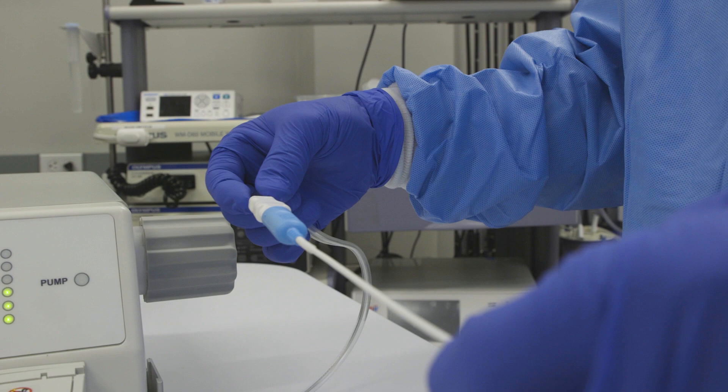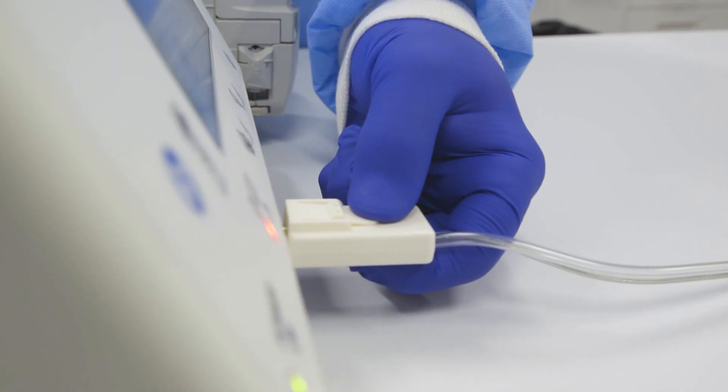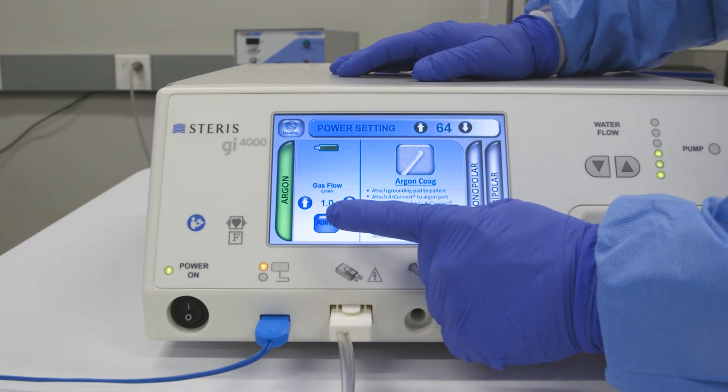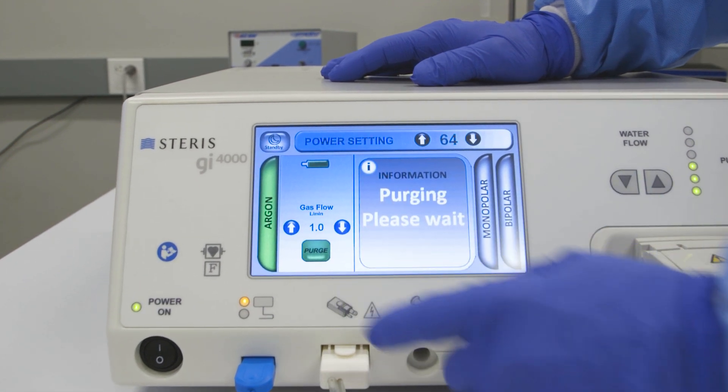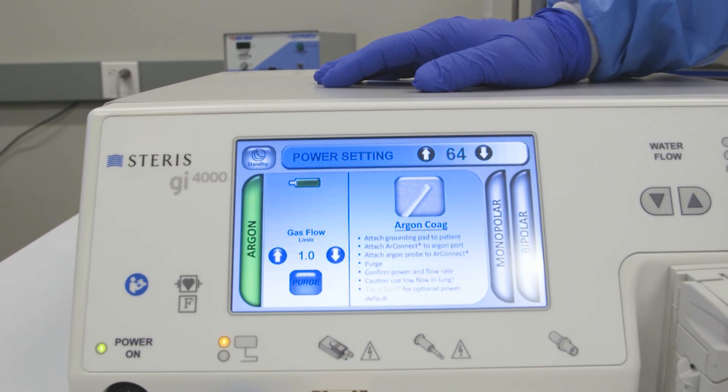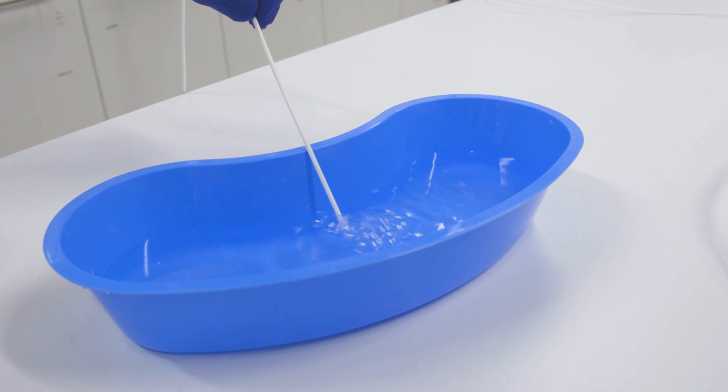If either device has evidence of damage or blockage, replace the accessory. To verify the issue has been resolved, manually purge the argon gas line to ensure gas flows through the accessories properly.